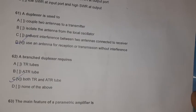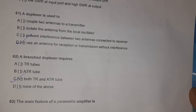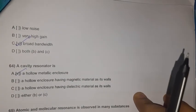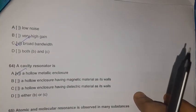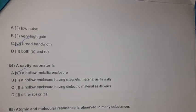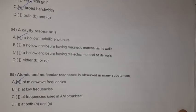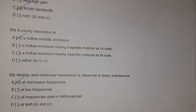Question 61: The main features of a parametric amplifier are very high gain and broad bandwidth — both b and c. Question 62: A cavity resonator is a hollow metallic enclosure.